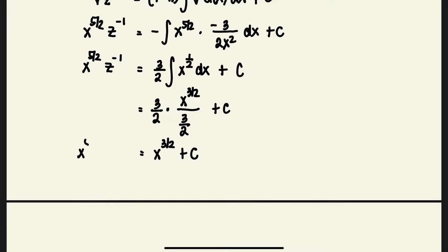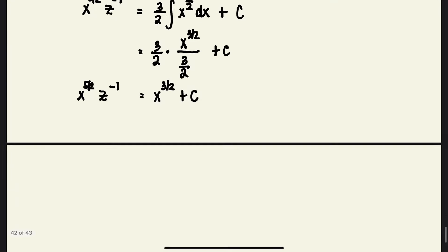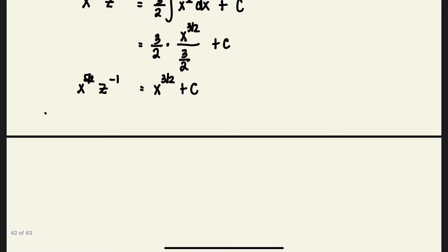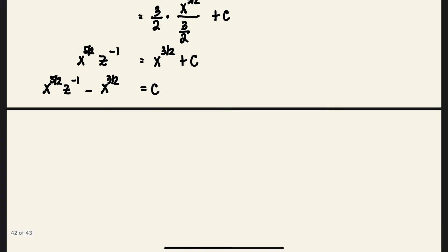So we have x^(5/2) · z^(−1) − x^(3/2) = C on the right side.